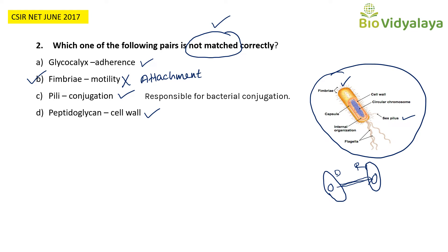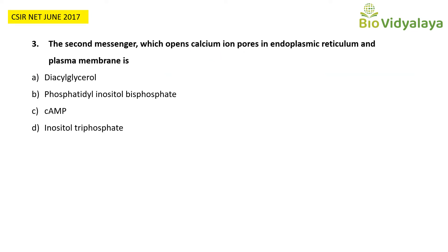Third question: The second messenger which opens calcium ion pores in the endoplasmic reticulum and plasma membrane is — option A: diacylglycerol; option B: fimbriae; option C: cyclic AMP; option D: inositol triphosphate. They are asking which second messenger is responsible for opening calcium ion pores in the ER and plasma membrane. This is from cell communication and signaling, which is very important in cell biology.